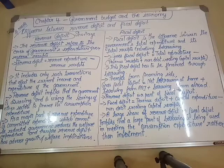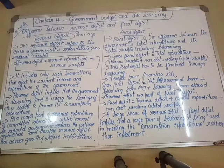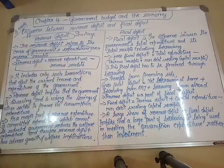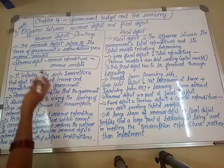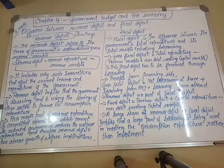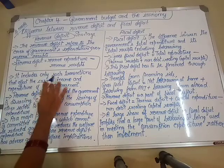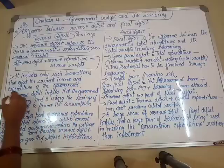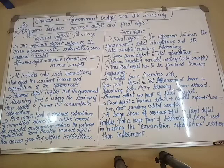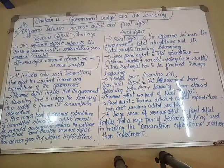Don't write revenue receipts minus revenue expenditure — if you write it that way it becomes revenue surplus, and we are not talking about surplus, we are talking about deficit. So expenditure should be more: revenue expenditure minus revenue receipts. These revenue expenditures and revenue receipts include only such transactions that affect the current income and expenditure of the government — it may be within a year. So that is our revenue deficit.